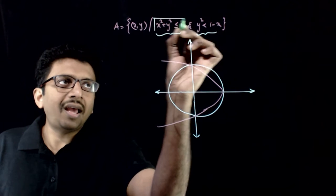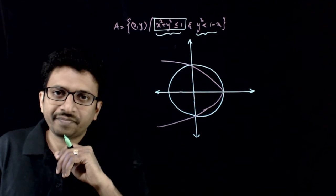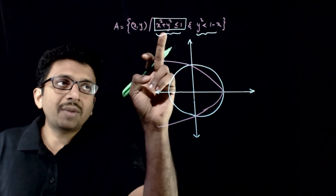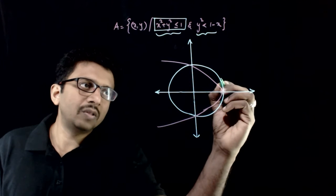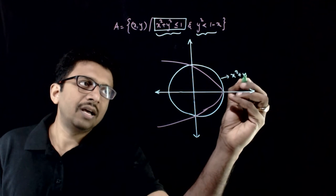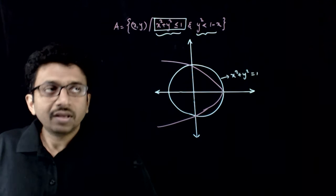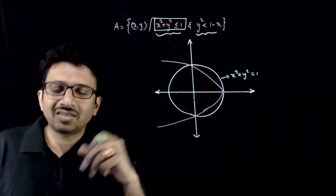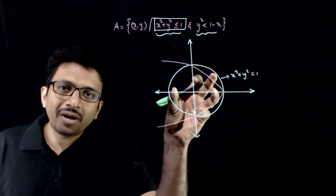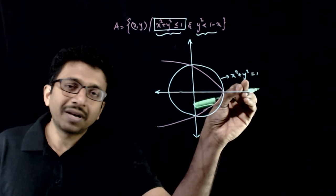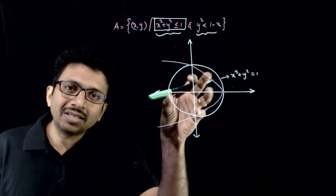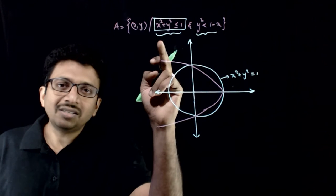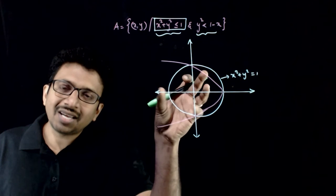We know that an inequality represents a certain region. If you go for x² + y² ≤ 1, then x² + y² = 1 represents a circle. So x² + y² ≤ 1 represents the region inside the circle, because if you take any point on the circle x² + y² will equal 1. If you go inside the circle, the values of x and y decrease, hence x² + y² will be less than 1. So the first region is the region inside this circle.